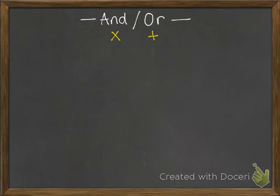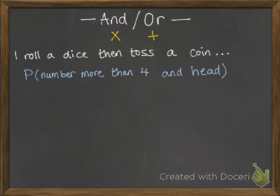Now we have some key things with and and or. If you see and and or in a sentence where you're working out probability, and always means that you multiply and or means that you add. So let's see what this looks like. If I roll a dice, then toss a coin, what's the probability that I get a number that's more than four and a head?